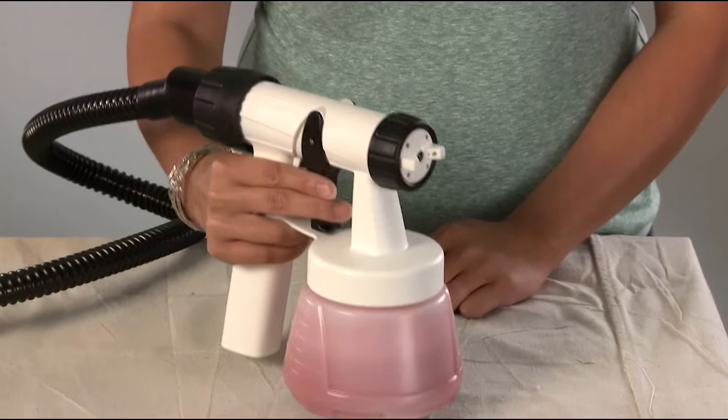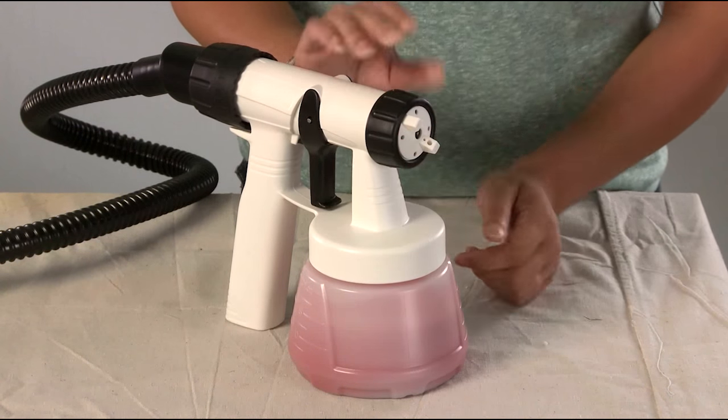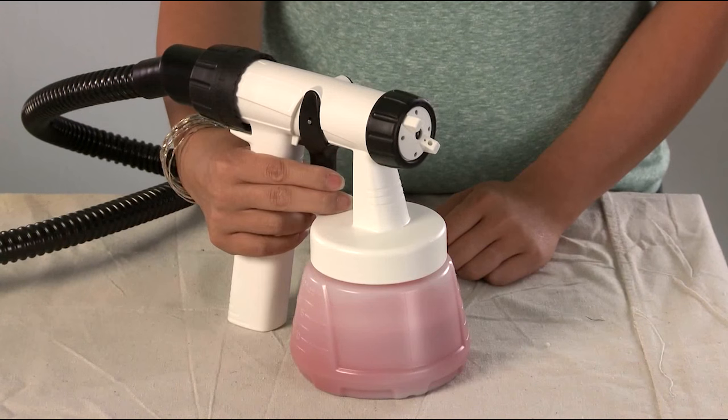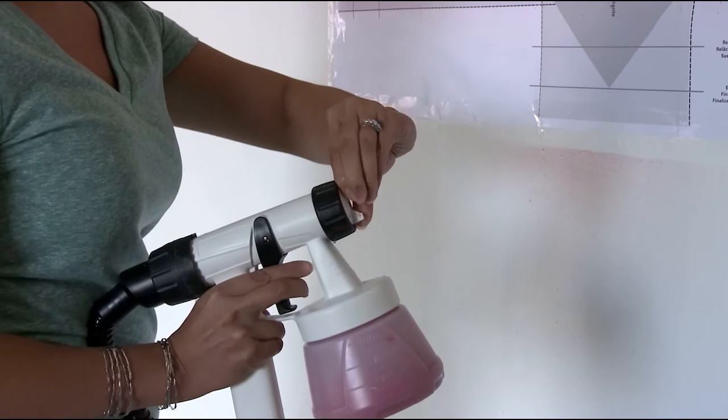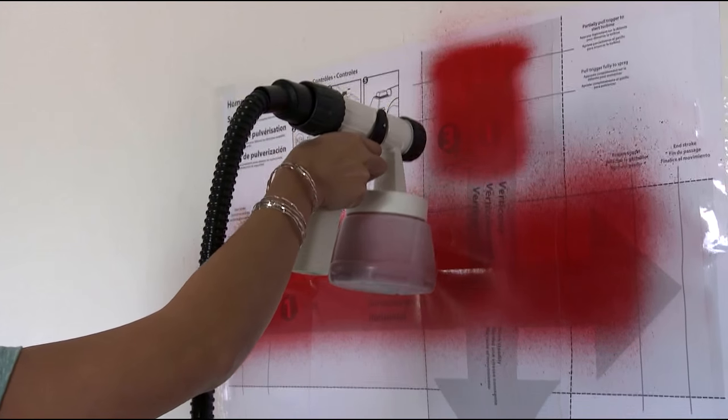When positioned diagonally, the result will be a small, round spray pattern. This pattern is ideal for small or narrow painting, like chair legs and spindles. Again, we recommend practicing your spray patterns on cardboard or the poster prior to painting.